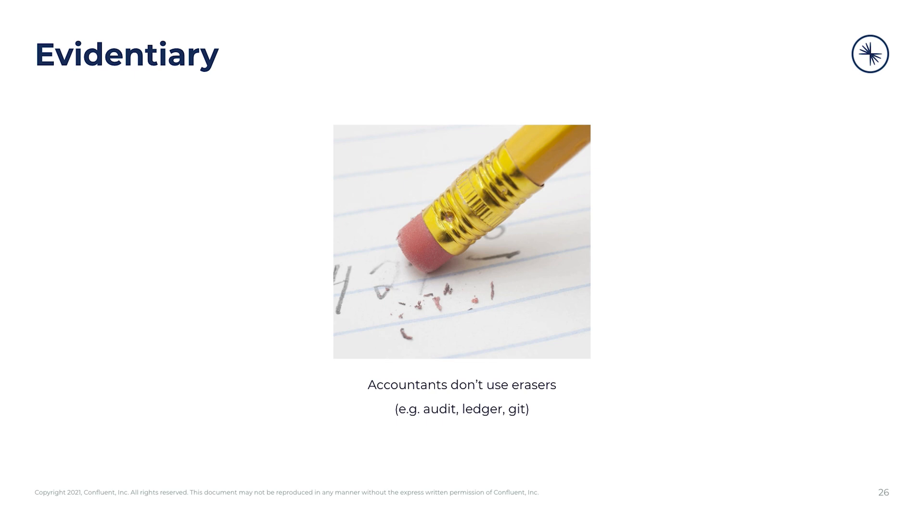This provides the perfect evidentiary basis for a system — one that allows you to look back at what happened at a previous time. This approach is quite similar to the way accountants do double entry bookkeeping, a method where no numbers are changed ever. Instead, entries are always appended to the ledger. This is where the old adage 'accountants don't use erasers' comes from.